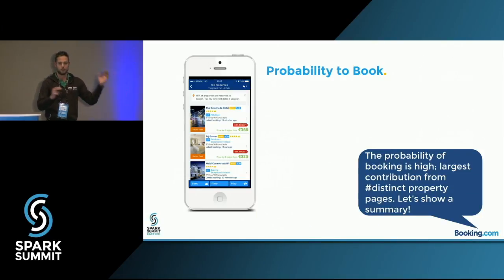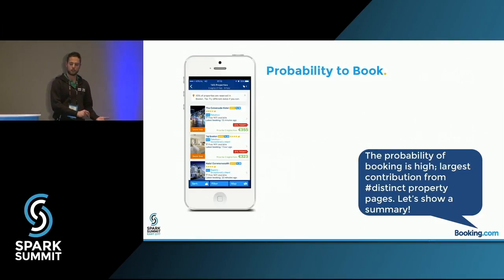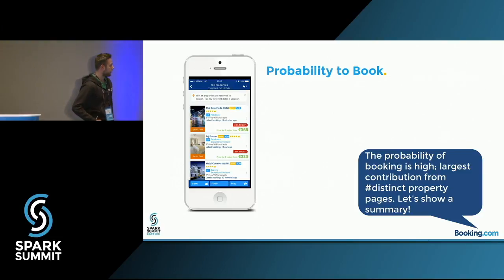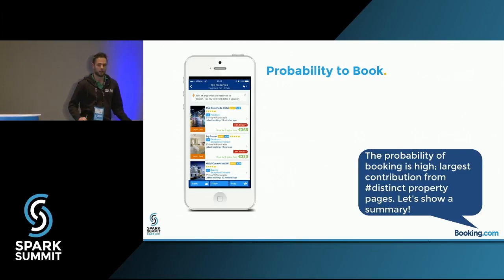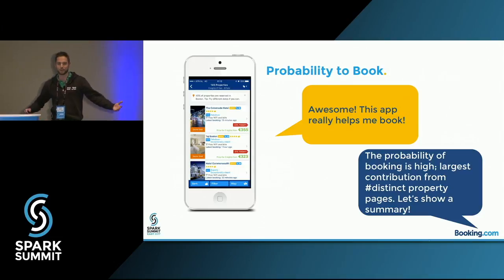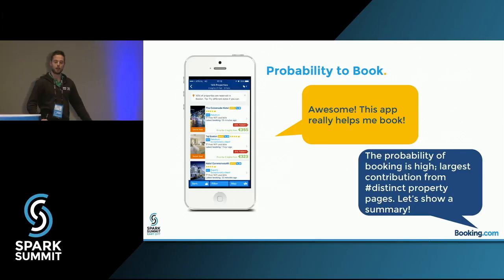Going back to the running example: we calculate a score — a probability of booking — and find it's high. We also have the contribution calculation implemented. The largest contribution turns out to be the distinct number of pages viewed. That can lead to showing a summary or something similar, and the customer is happy because you made an app that really helped them book.